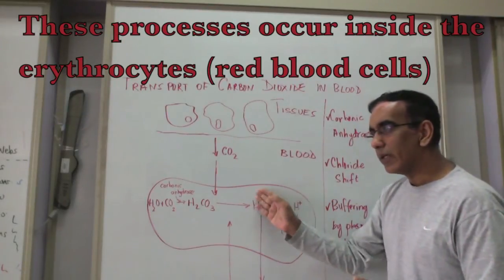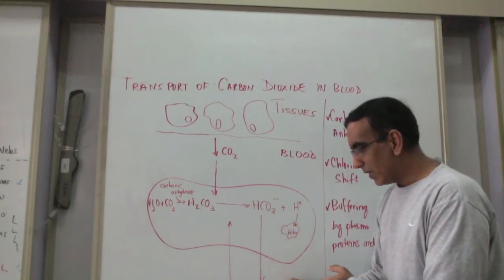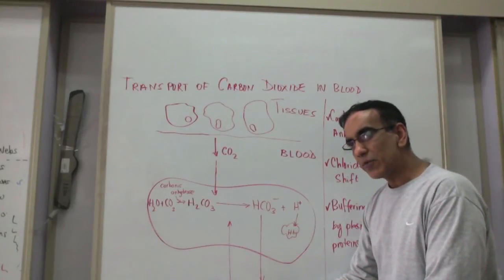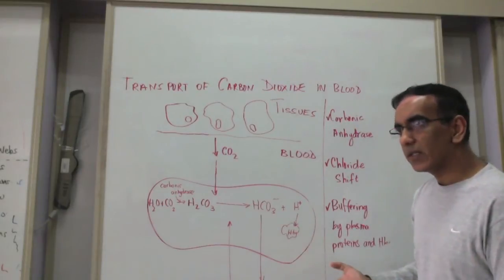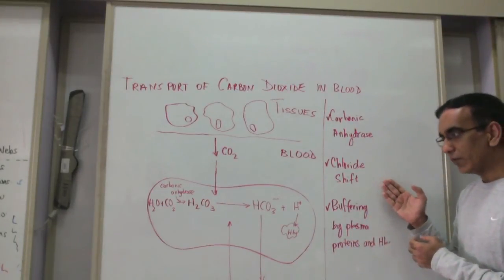The hydrogen carbonate leaves the cell and goes into the plasma and the ionic balance is restored by the influx of chloride ions. And this is referred to as the chloride shift.